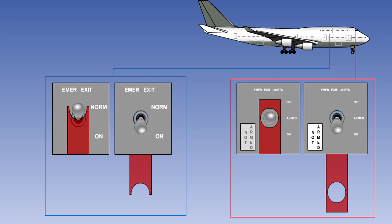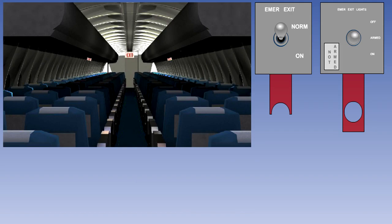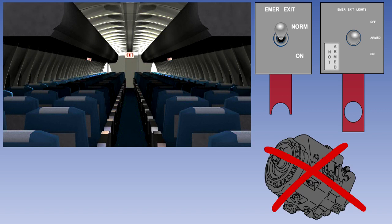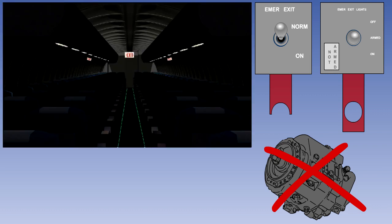The passenger cabin switch has two positions: normal and on. It is usually in the normal position. With the flight deck switch in the armed position and the cabin switch in the normal position, the emergency light control circuit is armed. It is monitoring the aircraft's essential electrical system, and provided the system is normal, the emergency lights will be extinguished. If the aircraft's essential electrical power system fails, the emergency lights will illuminate automatically.